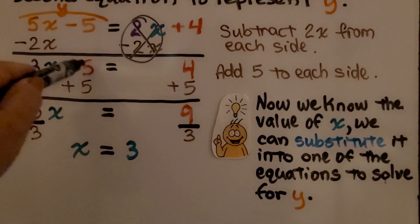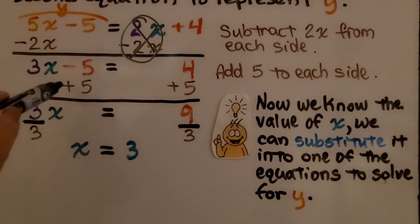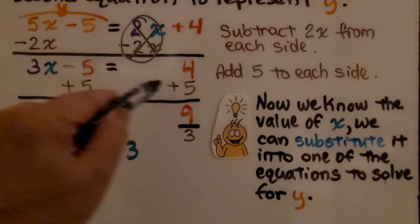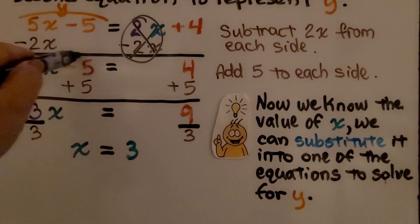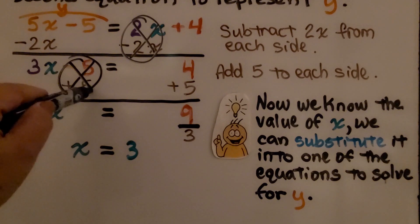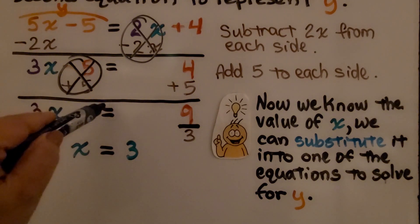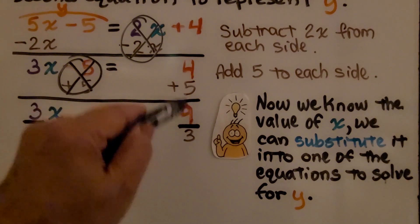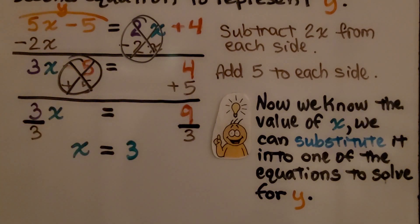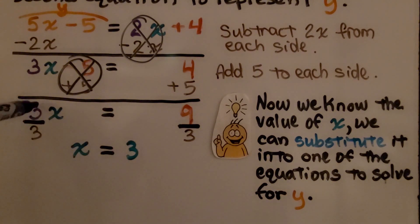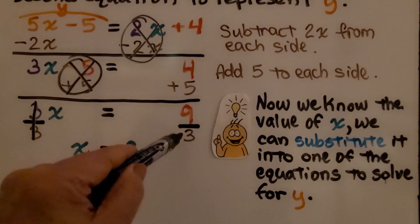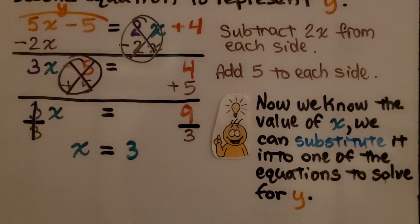Since this is a minus 5, the inverse operation is to add 5 to each side. That creates a zero pair and eliminates it, leaving 3x equals 4 plus 5, which is 9. Now we divide both sides by the coefficient 3. We get 1x and 9 divided by 3 is 3, so x equals 3.